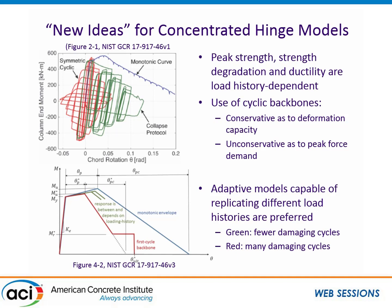What comes out of this that is new to us is use of a concentrated hinge model that actually has peak strength, strength degradation, and ductility which are a function of the load history — really similar to what has been done in modeling steel frames. This document suggests that if you have a monotonic loading, you're going to be somewhere on this blue curve. If you have a very demanding cyclic load history, then you're going to have responses like this red curve, which would be this red envelope down at the bottom.